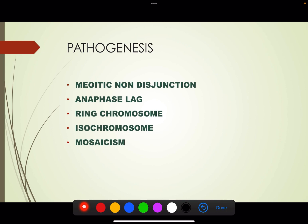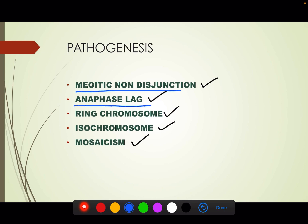What is the pathogenesis? It can be because of meiotic non-disjunction — that is, failure of separation of homologous chromosomes during anaphase of meiosis. Or it can be because of anaphase lag, ring chromosome, isochromosome, and mosaicism. So the causes are: meiotic non-disjunction, anaphase lag, ring chromosome, isochromosome, and mosaicism.